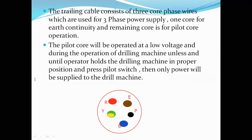The trailing cable consists of a total of five cores: three cores for three-phase power supply R, Y, B; one core for earth continuity; and the last one, the pilot core, which is black in color. In entrance examinations, you might be asked what color is the pilot core lead — its insulation is black in color. This completes the basic construction of the trailing cable.